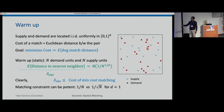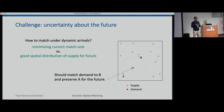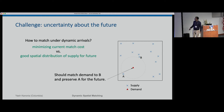We have the additional complication in dynamic settings of uncertainty about the future. Algorithmically, static matching is easy — we have fast algorithms. But in the dynamic setting, if a demand arrives whose nearest neighboring supply is here, would you match it to supply A or B if there is more demand to come? Maybe you want to preserve A for a future demand that might arrive nearby. The greedy algorithm is typically suboptimal and it's not obvious how to do the matching.